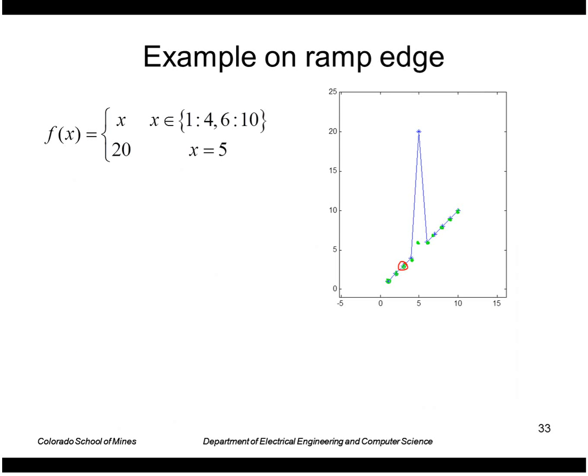As an example, take this case where I have a ramp with a very large noise value. If I compute the filter with width 5, at x equals 3, my values in that set are 1, 2, 3, 4, and 20. I take the median, which is the middle one, and the output g is 3.